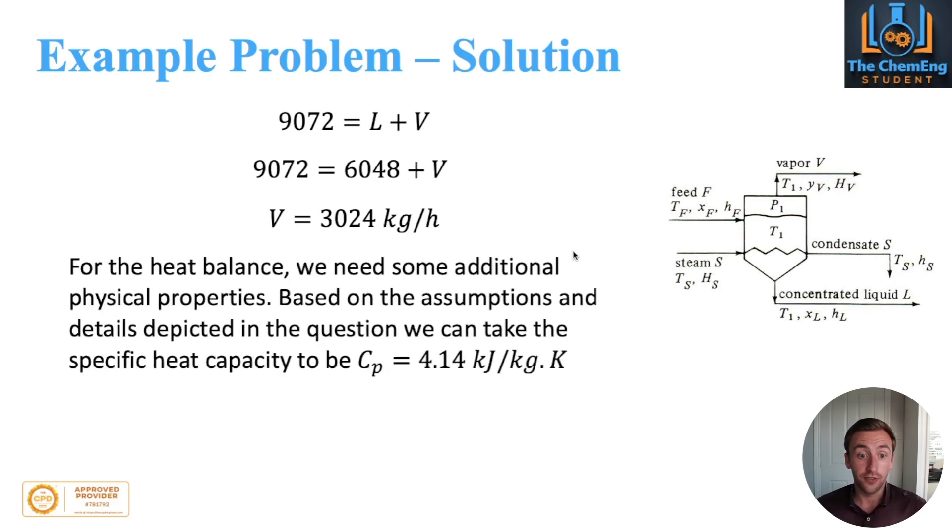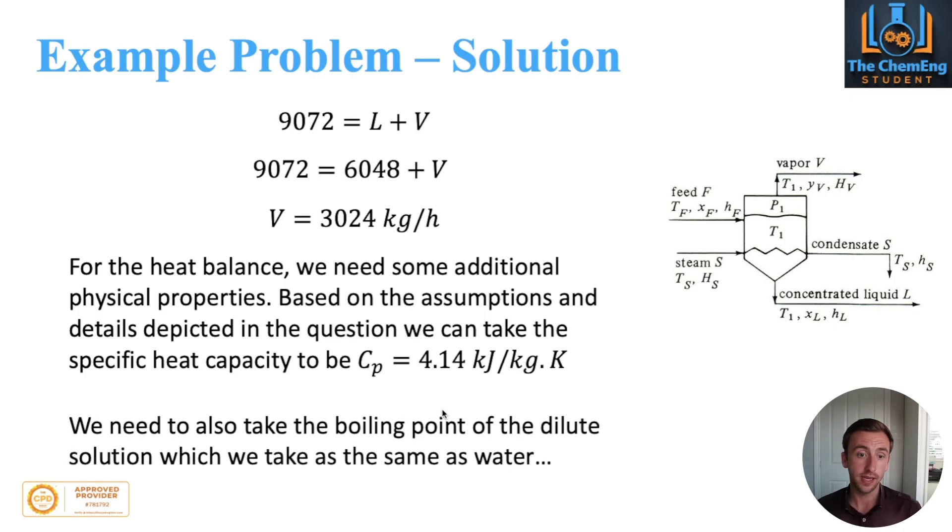Now, in order to solve for the heat balance, which allows us to find the heat transfer area, we need some more additional physical properties. Because they weren't all provided in the question, we will have to use the assumptions that were provided and use them to actually go and find the values. Based on the assumptions within the question and the details, we can take the specific heat to be 4.14 kilojoules per kilogram Kelvin, and that's because we are relating this to water.